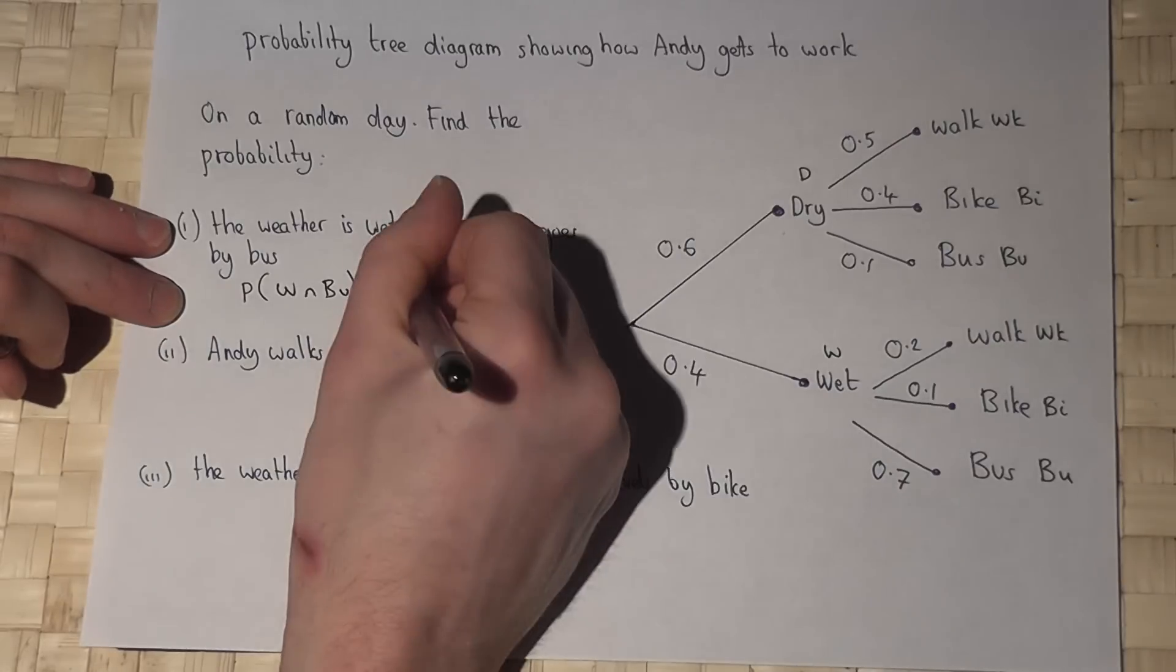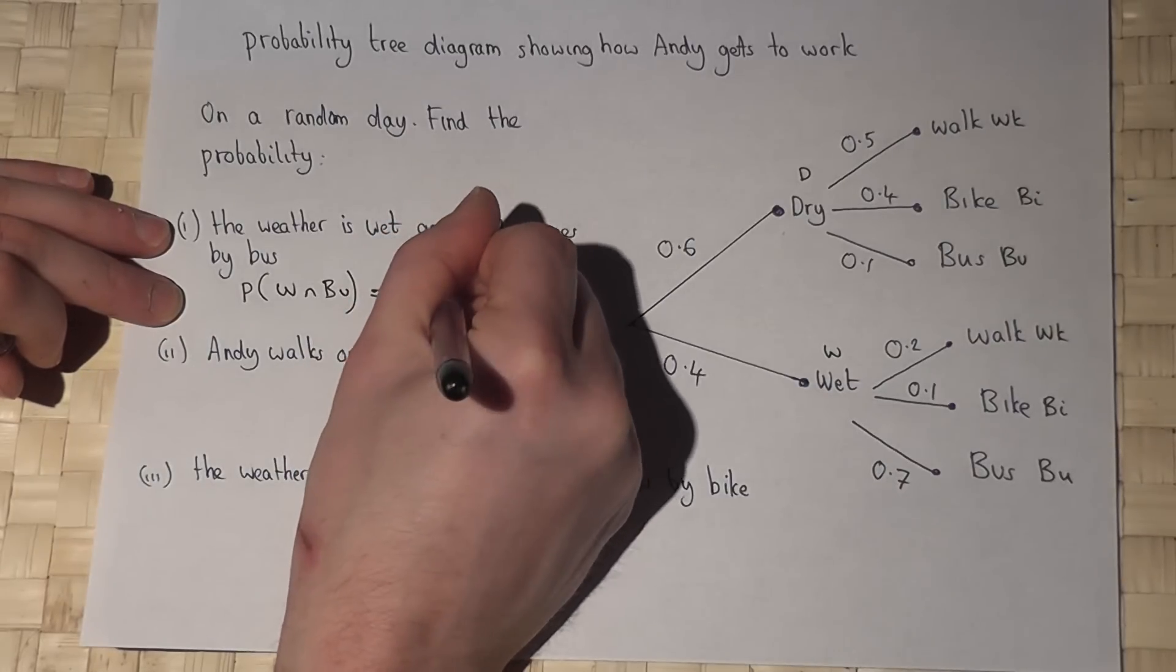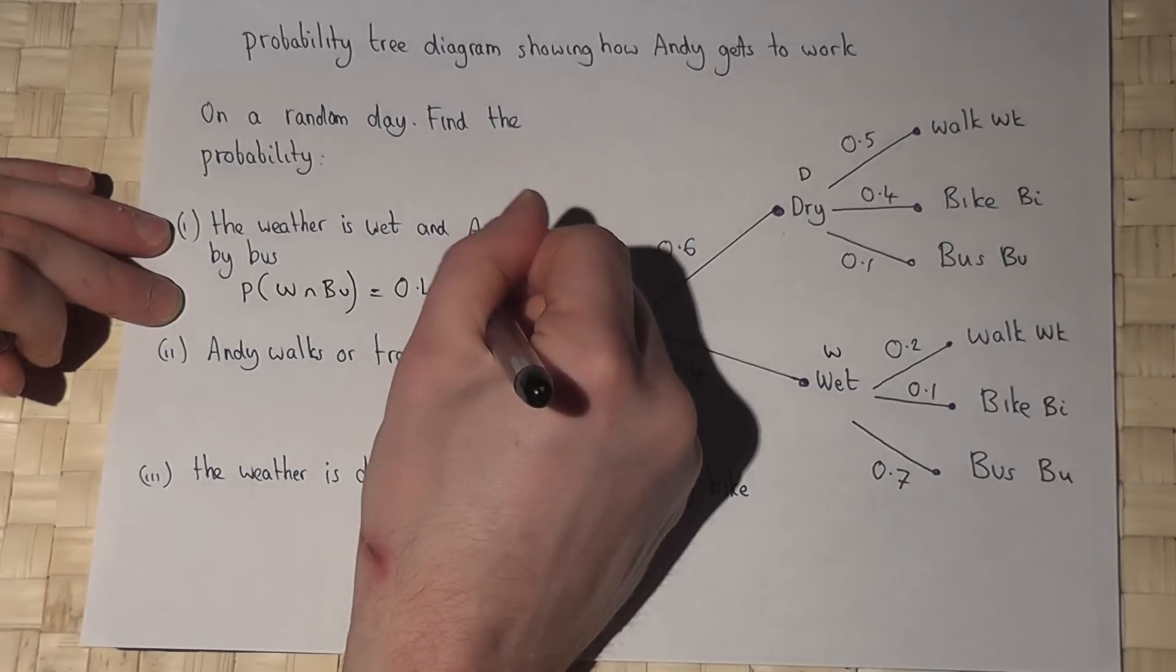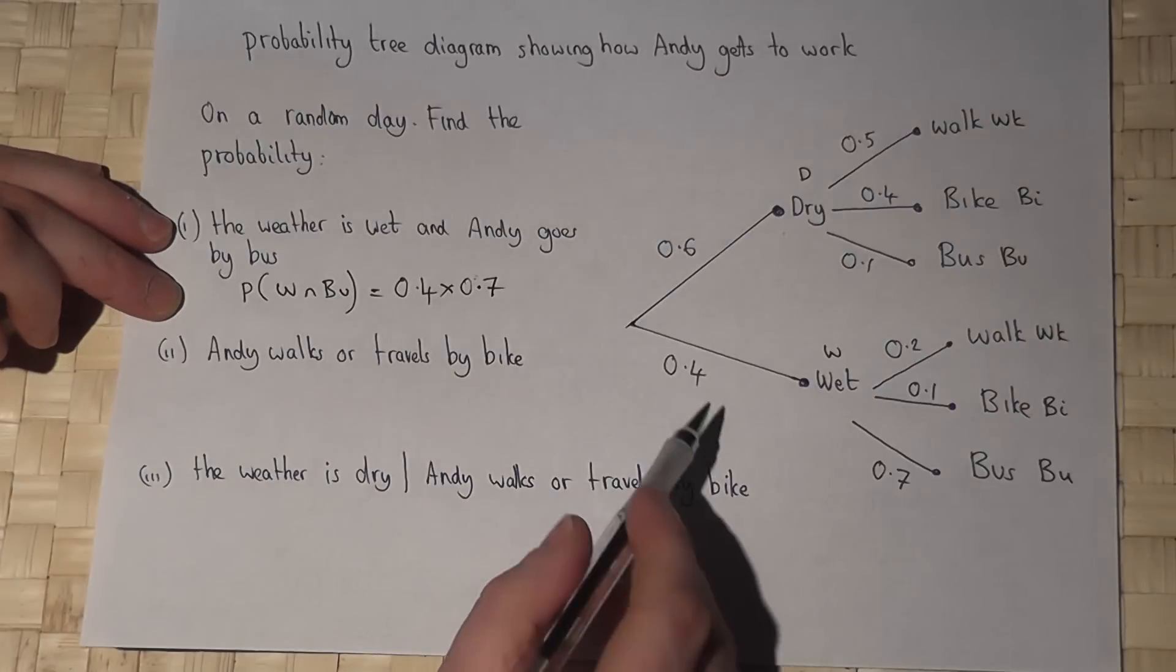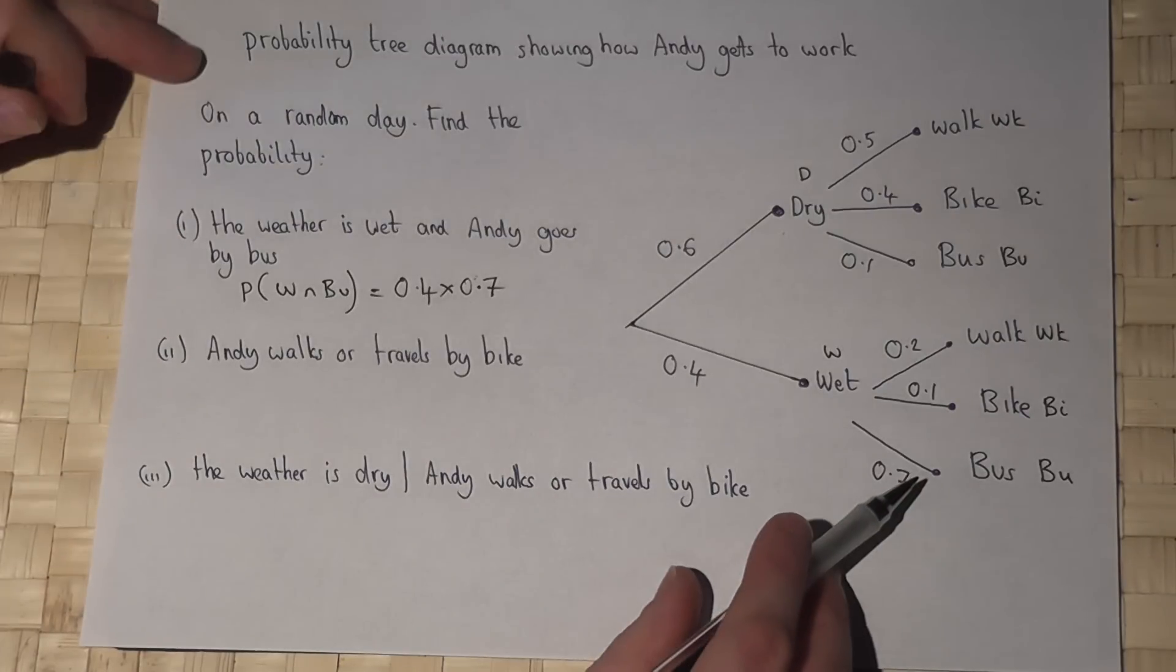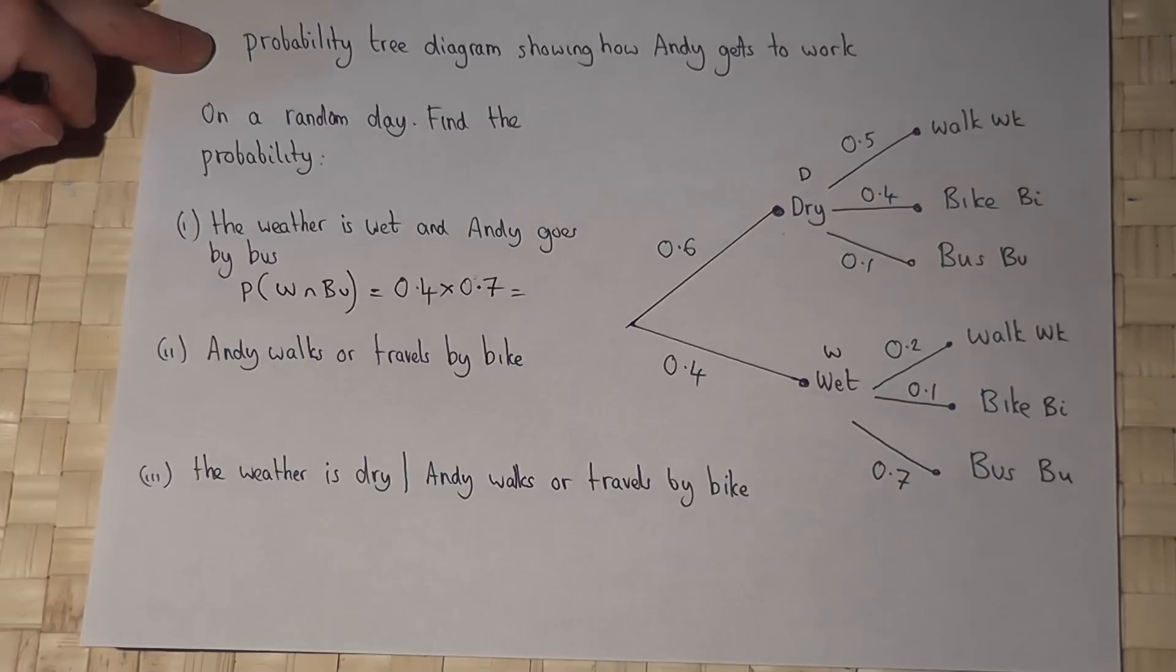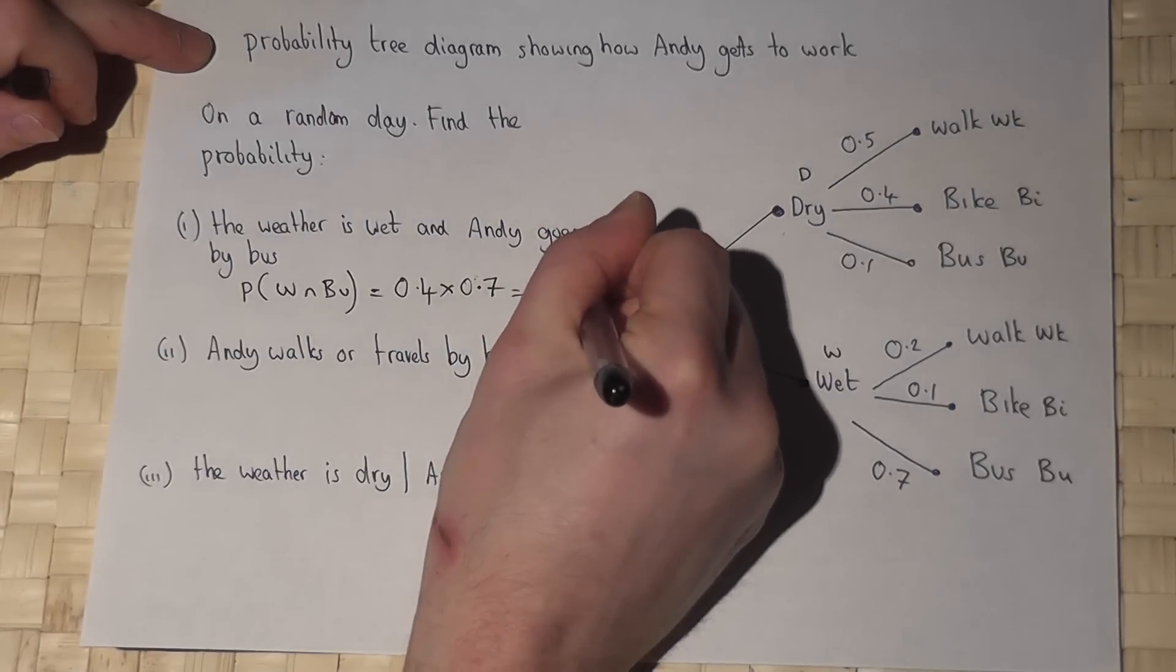equals 0.4 times 0.7. So we times together the two probabilities and that gives an answer of 0.28.